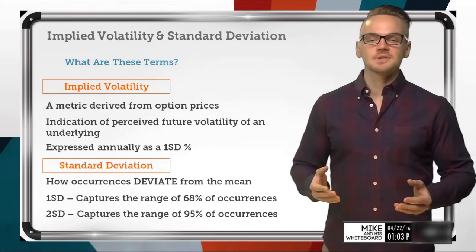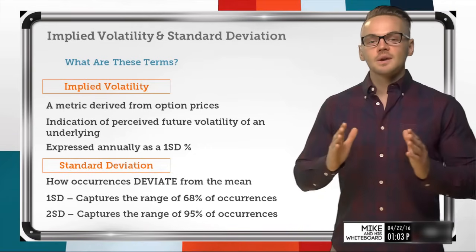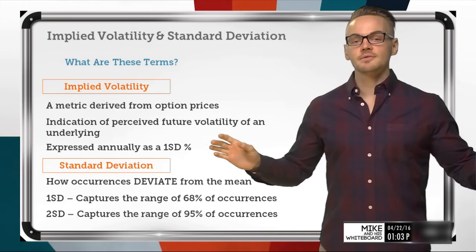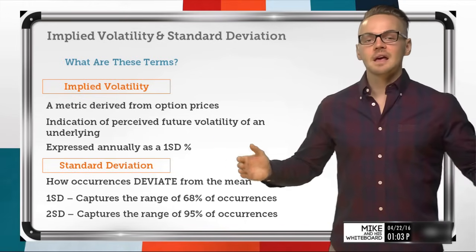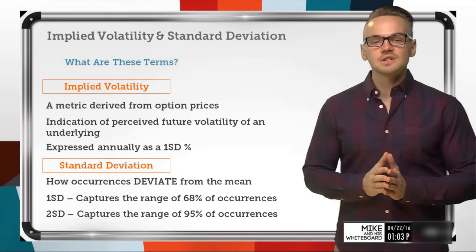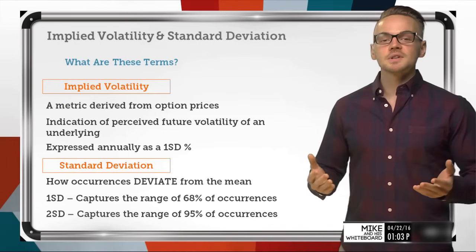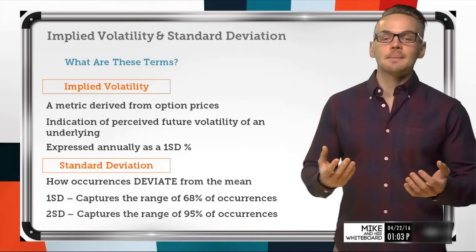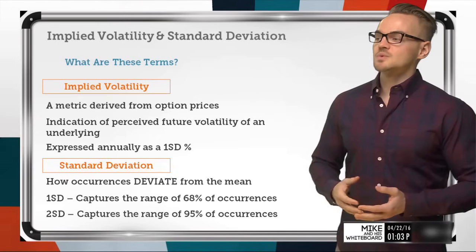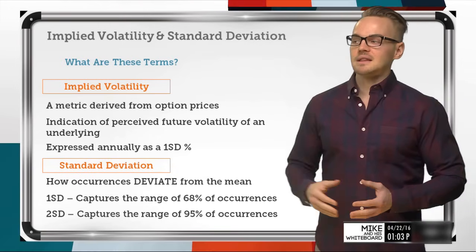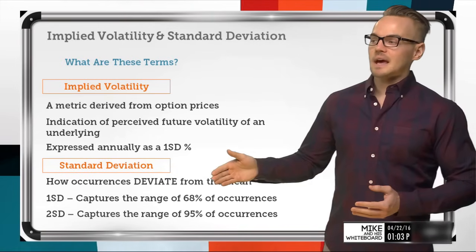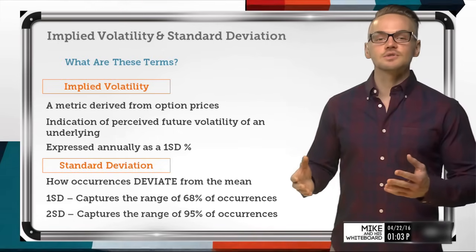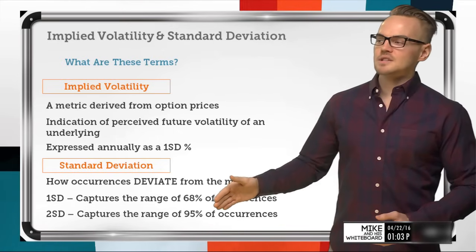So we're capturing almost all of those occurrences. We do have a few more outliers beyond that, but when we're looking at two standard deviations we're pretty much capturing the essence of what is implied or what could potentially happen. This is why we look at these values in the option market — we like to look at one standard deviation ranges when we're placing new trades.